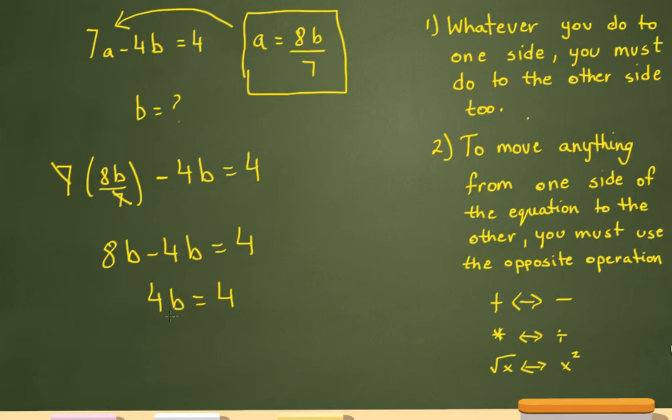Since I'm multiplying the 4 over here with the b, opposite of multiplication is division, I'm going to divide it by 4, divide it by 4, which is going to leave it with b equals 1.